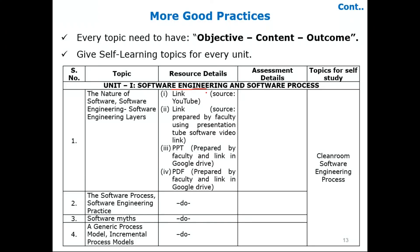This is a good practice when teaching a particular topic: aligning the objective to content and outcome. For example, taking a course called Software Engineering — unit name: Software Engineering and Software Process — teaching topics such as the nature of software, software engineering layers. Mention clearly what resources you are using: whether from a textbook, Google, a YouTube link, or a Google Drive link. Please mention clearly where it is available, because online teaching requires providing resources in the form of PPT, PDF, or Word documents.